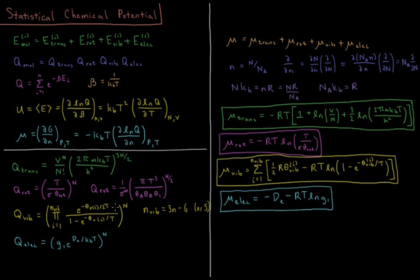That all gets taken to the power of the number of particles. For the electronic degrees of freedom, you have the degeneracy of the ground state — singlet, doublet, triplet, etc. — times e to the dissociation energy over Boltzmann constant times temperature, all of that to the N.